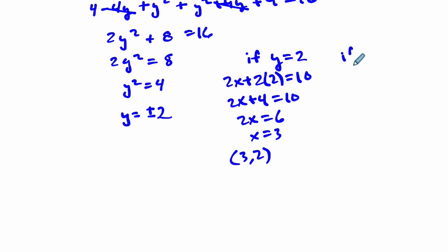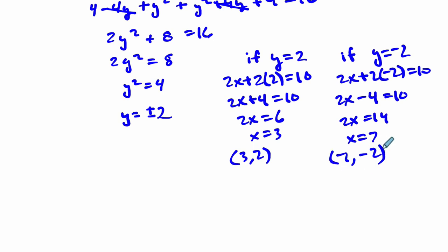And the other point will be if Y equals negative 2, we get 2X plus 2 times negative 2 is 10. That means 2X minus 4 is 10. Add 4 to both sides. 2X equals 14. Divide by 2 on both sides. X is 7. So the other point is where X is 7 and Y is negative 2. And that's our answer.